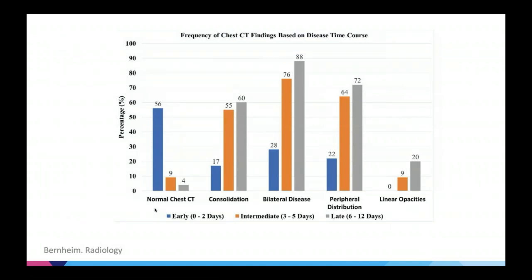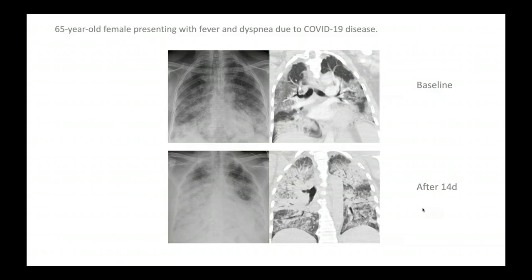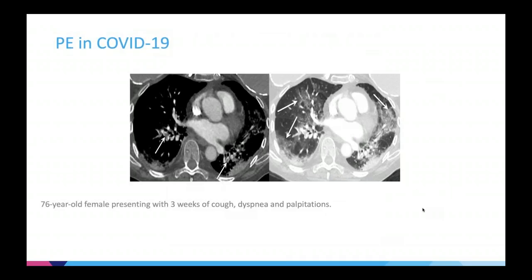I want to mention the risk of pulmonary emboli in these patients. Patients with moderate and severe disease may have an increased risk of thromboembolic events as described in a few papers, including pulmonary embolism. We measure D-dimers in these patients. Here is an example of a 76-year-old female with COVID-19 symptoms who subsequently developed a pulmonary embolism. Patients with moderate to severe disease are getting prophylactic anticoagulation when hospitalized to prevent these events.